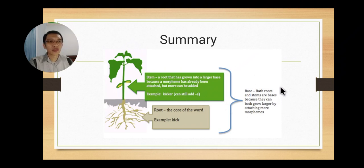What is base then? Base can be either root or stem because base can grow larger by attaching more morphemes. As long as the word is used as a basis to develop another word, it's called as base.